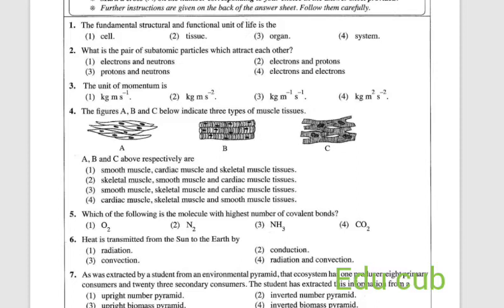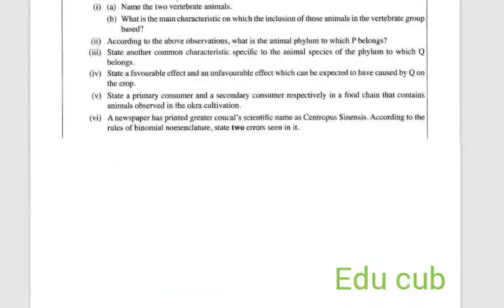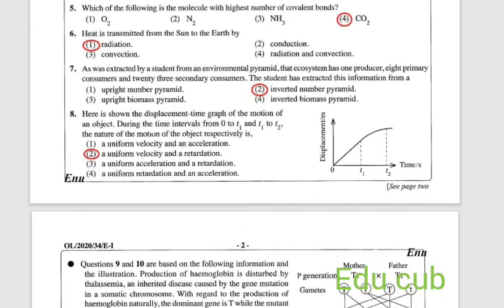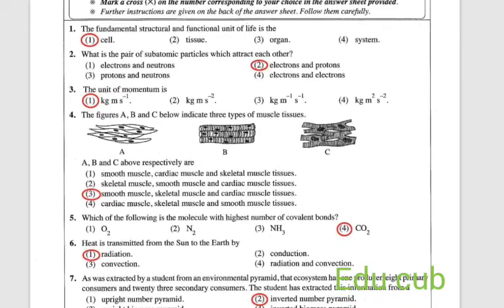The first question is: the fundamental structural and functional unit of life is? Answers are cell, tissue, organ, system. Very simple, the answer is cell. Let's move to the answers here. You can see the answer is cell.